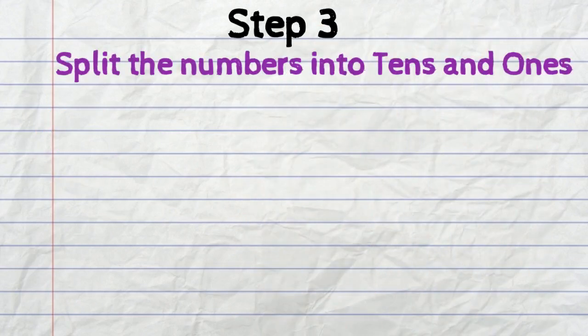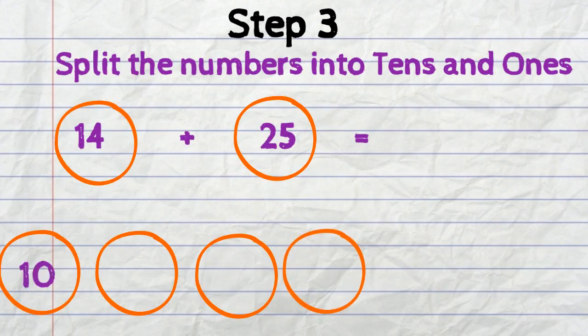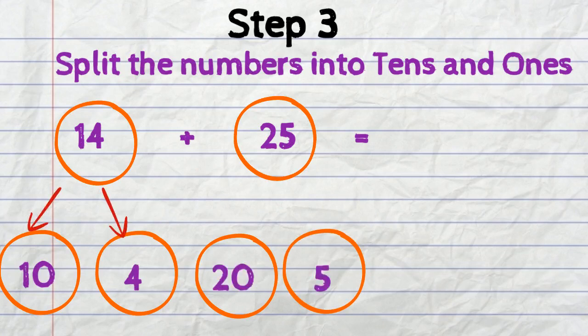The third step. Split the numbers into tens and ones. So 14 would be split into a 10 and a 4. 25 will be split into a 20 and a 5.